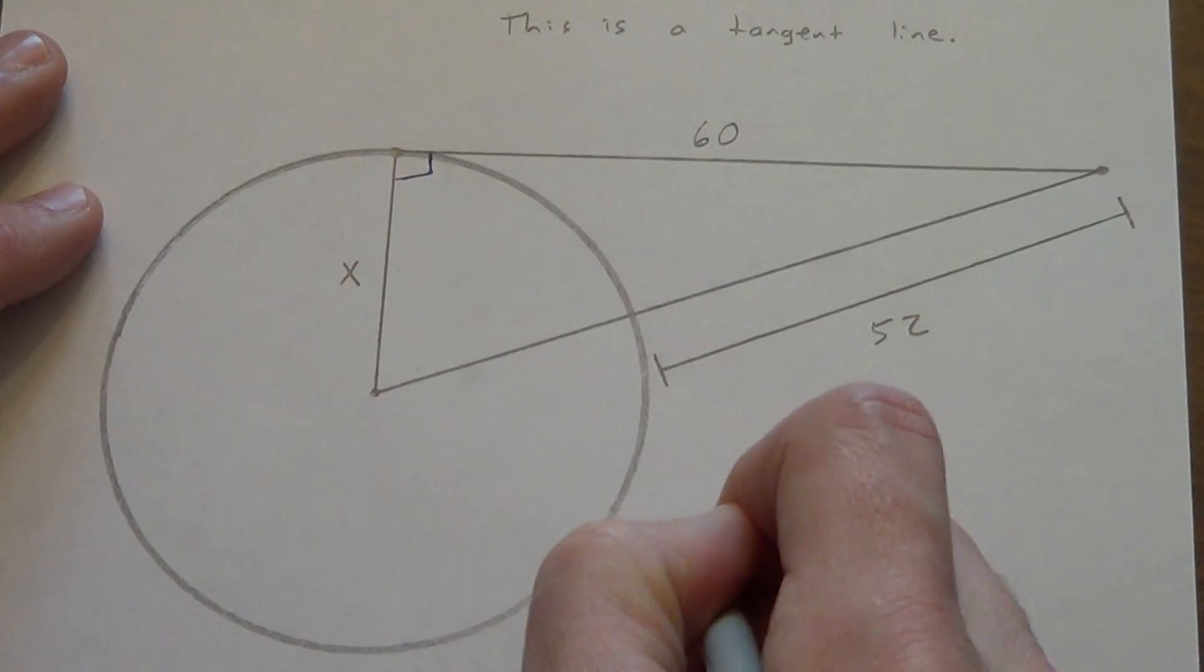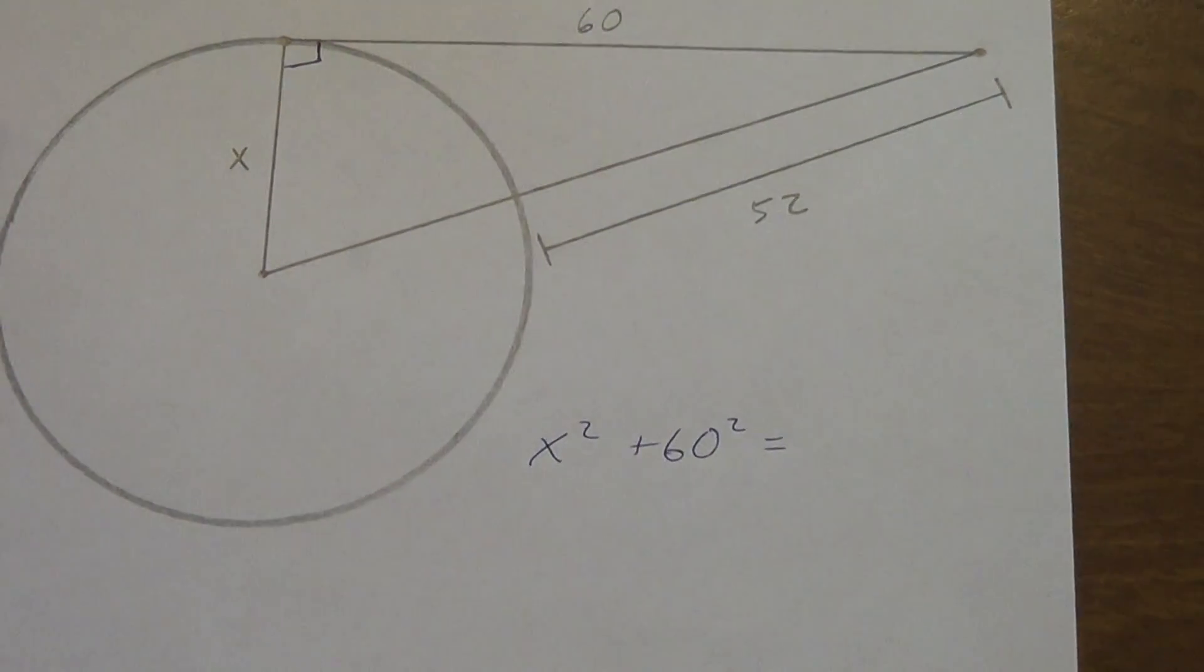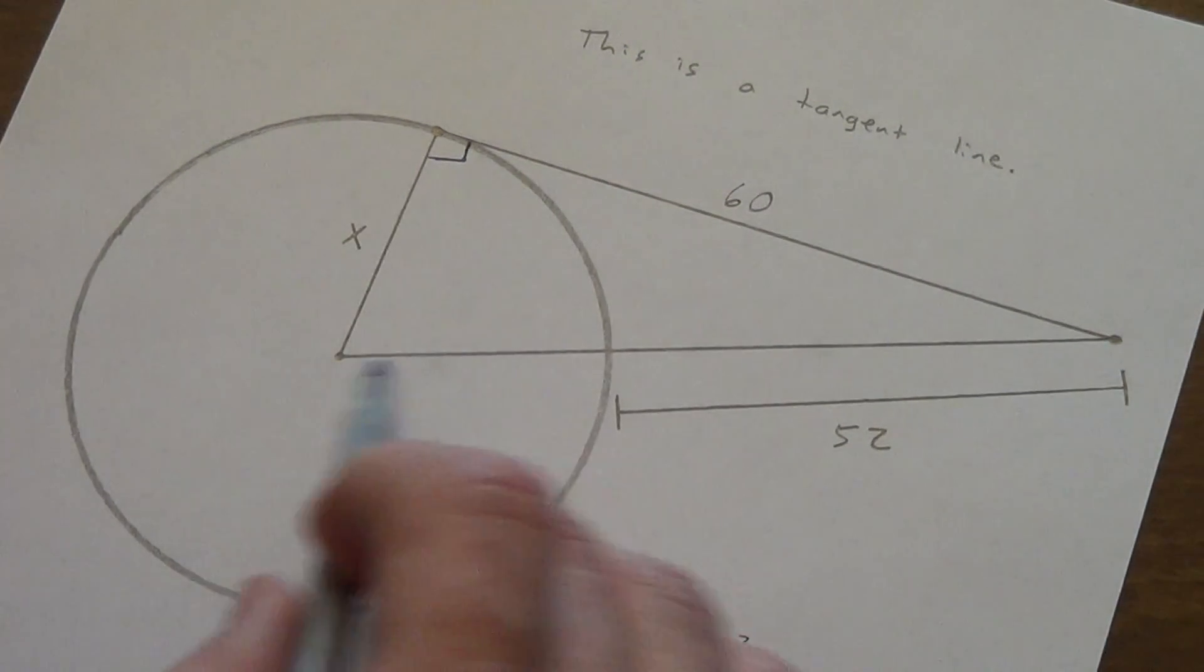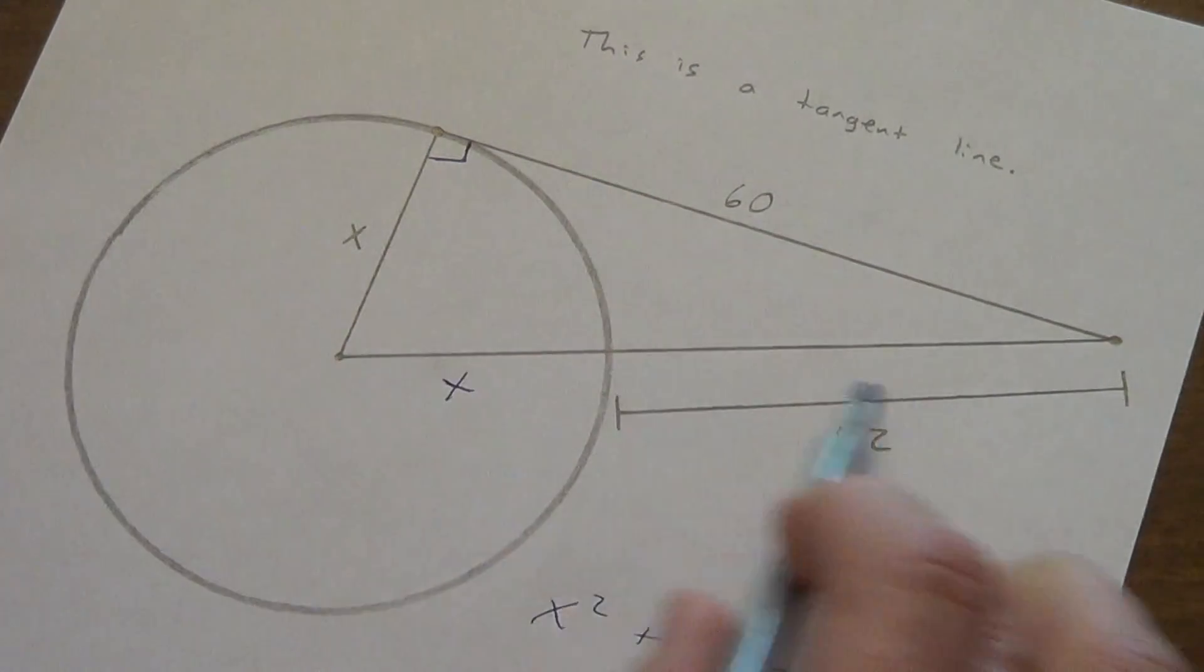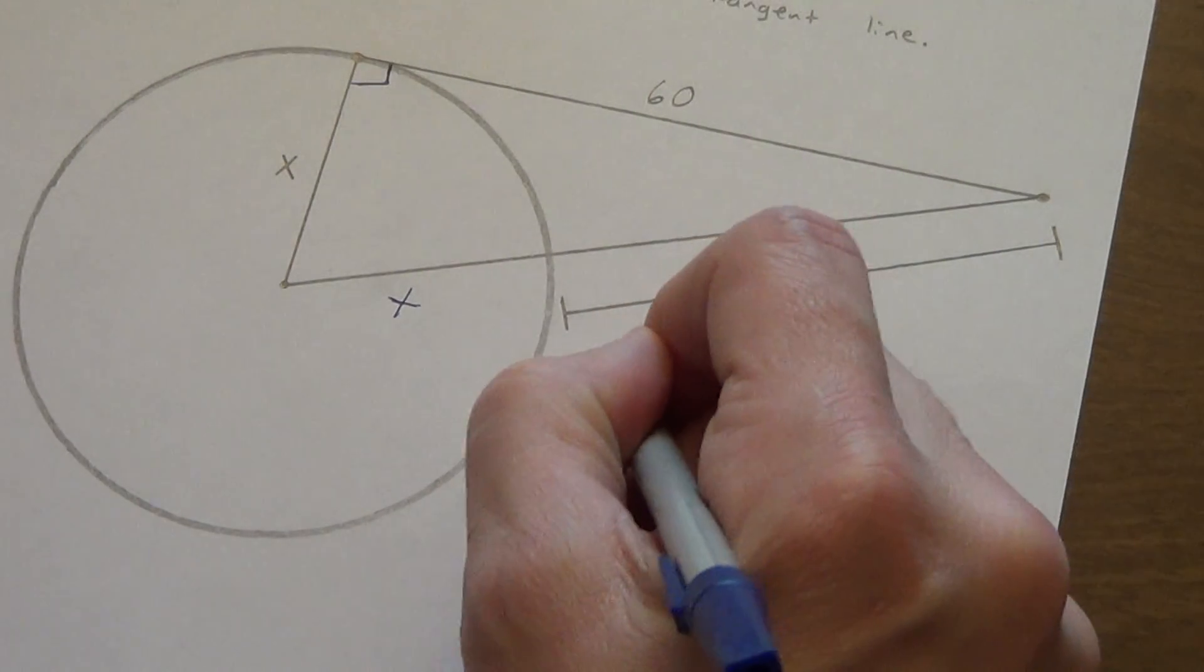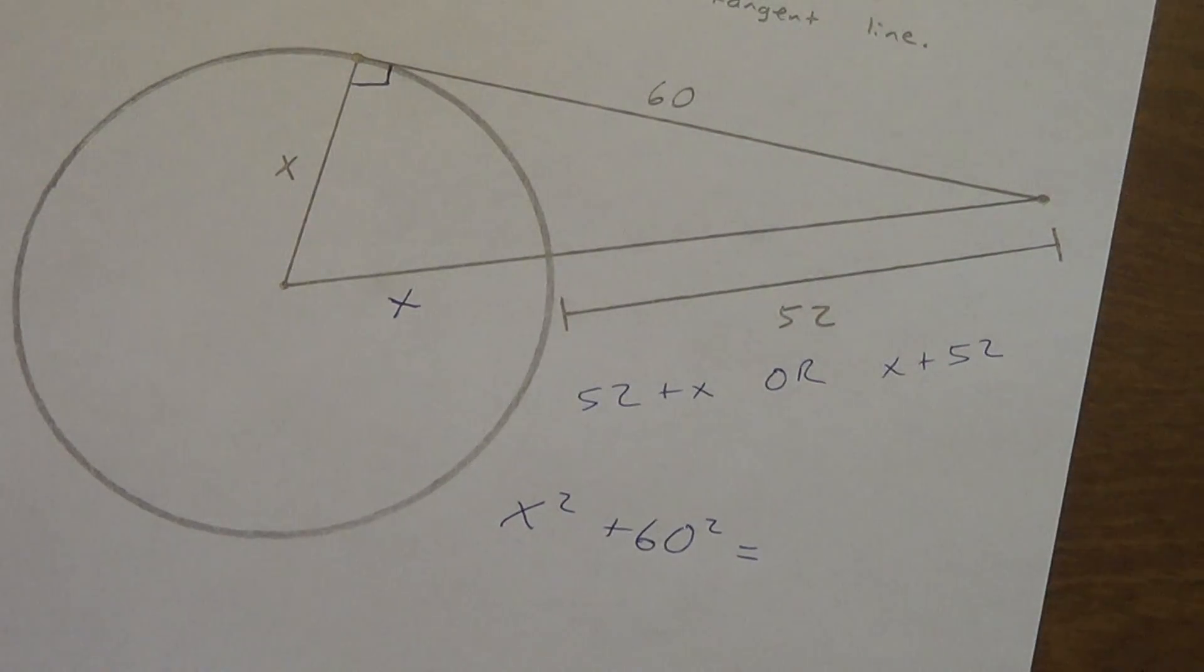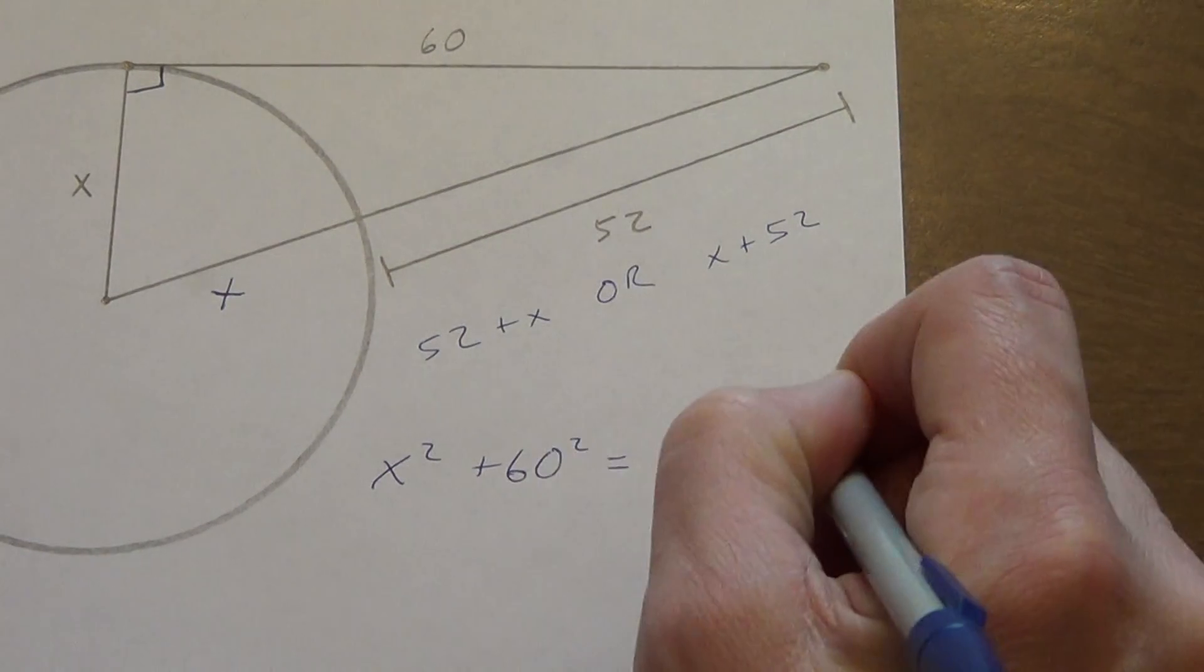So a squared, x squared, plus b squared, 60 squared, equals. This one's a little harder. Well, just like before, we know that the radius distance never changes. So, if that's x, this also has to be x. So, what's this whole distance? We don't multiply. We add. So, that whole distance is 52 plus x. Or, you could say x plus 52. Either way is fine. I'm going to go with the x plus 52. So, we put x plus 52 squared.